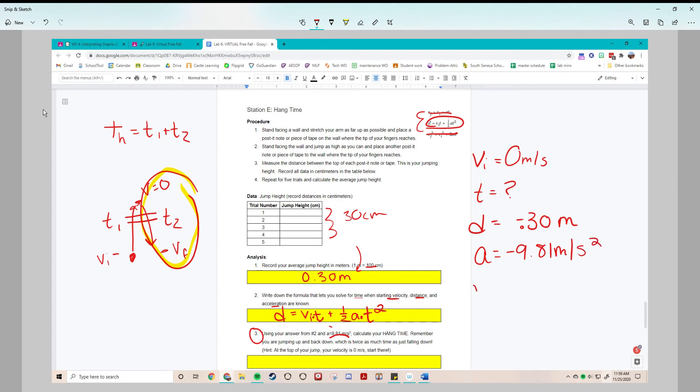I know my acceleration is negative 9.81 meters per second squared. And my v final is unknown but I don't need to know it. So I'm just going to plug that in for my d equals v_i t plus one half a t squared. Because v initial is zero, I cross that term out and I'm just going to be solving d equals one half a t squared for t.